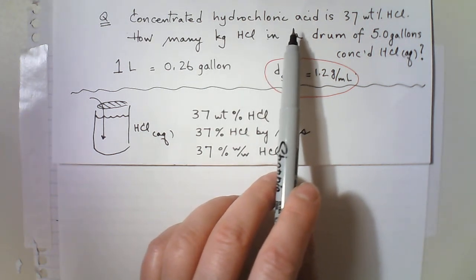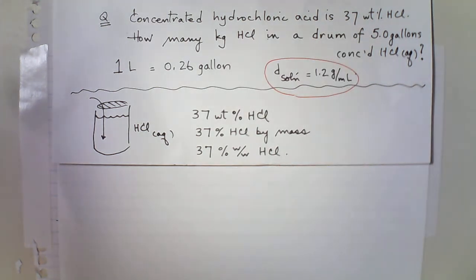And conch HCl, as we like to call it, is 37 weight percent HCl. The rest would be water. And given that, we want to know how many kilograms of HCl there is contained in a drum of 5.0 gallons of concentrated hydrochloric acid, the aqueous stuff.